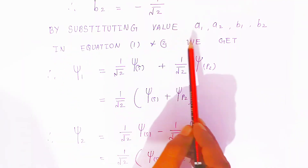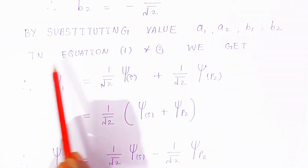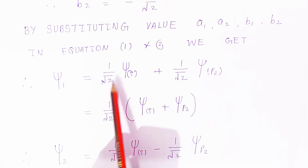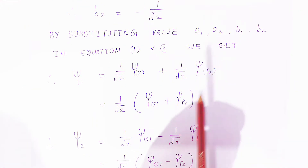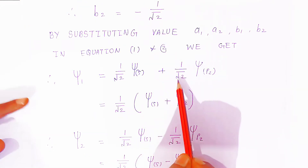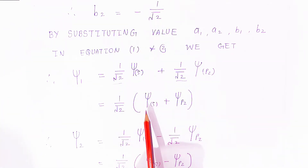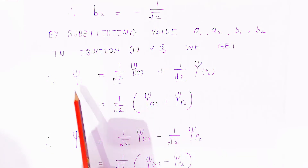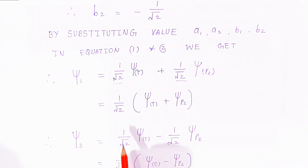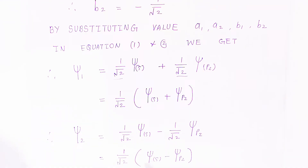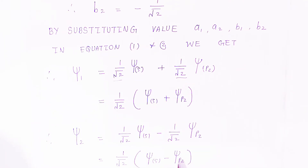Substituting the values of A₁, A₂, B₁, B₂ in equations 1 and 2, we get: Ψ₁ = (1/√2)(ψS + ψPZ) and Ψ₂ = (1/√2)(ψS − ψPZ). These are the two SP hybrid wave functions.